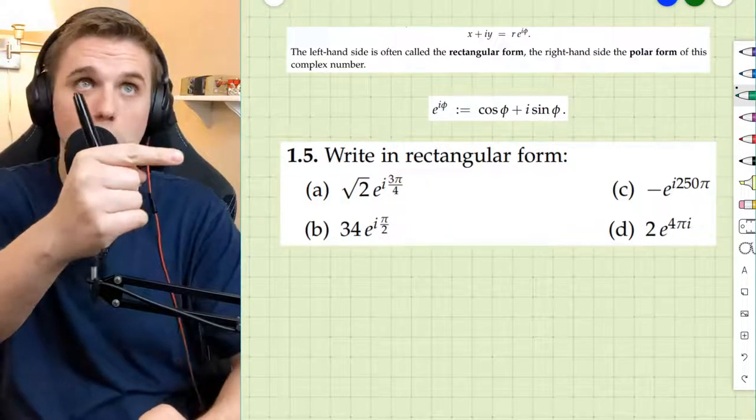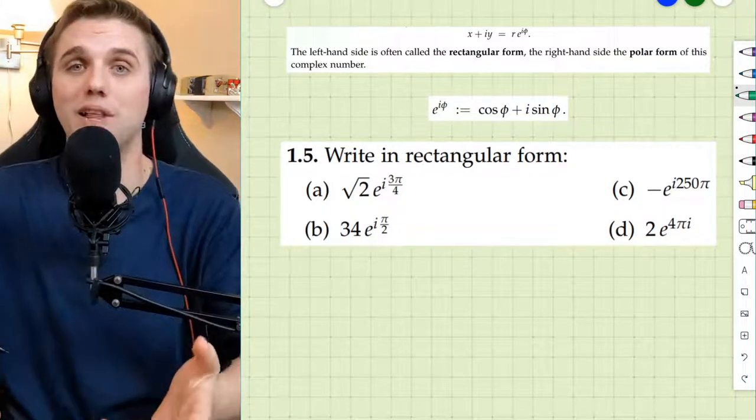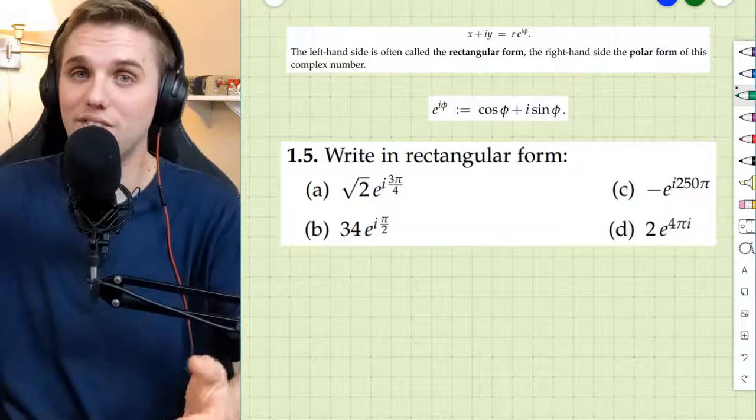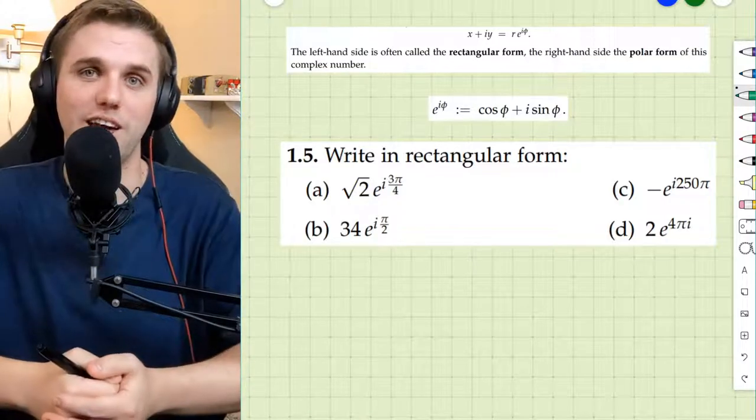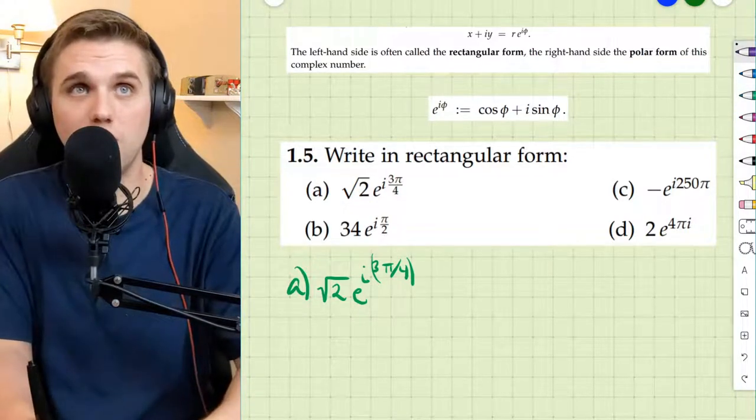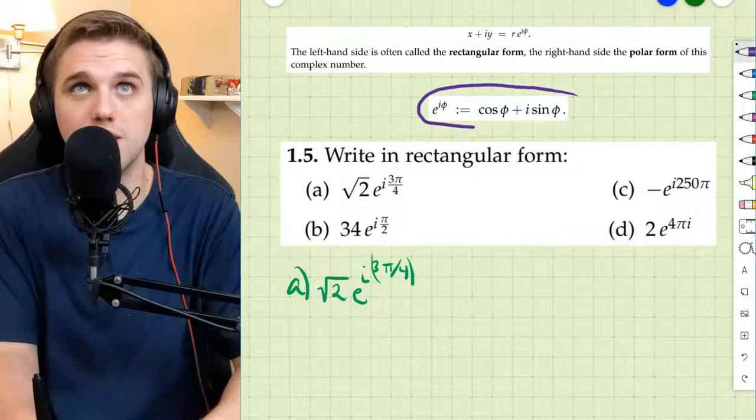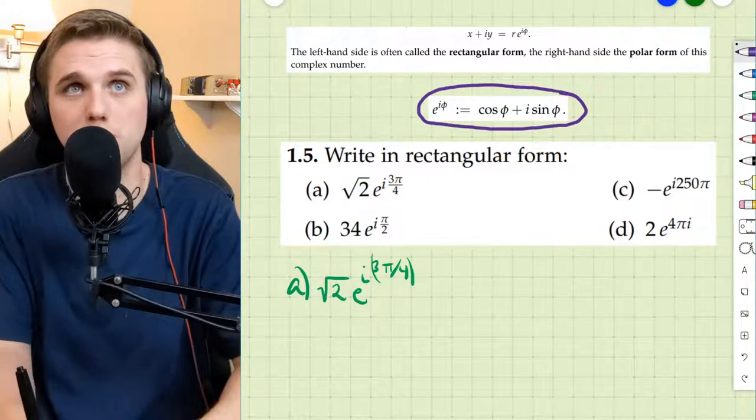Now this problem is problem 1.5, which can be found in your free online complex analysis textbook. I'll leave a link in the description so that you can check that out. Let's start with part a here. To convert this number into rectangular form, we have to utilize this definition as much as possible.